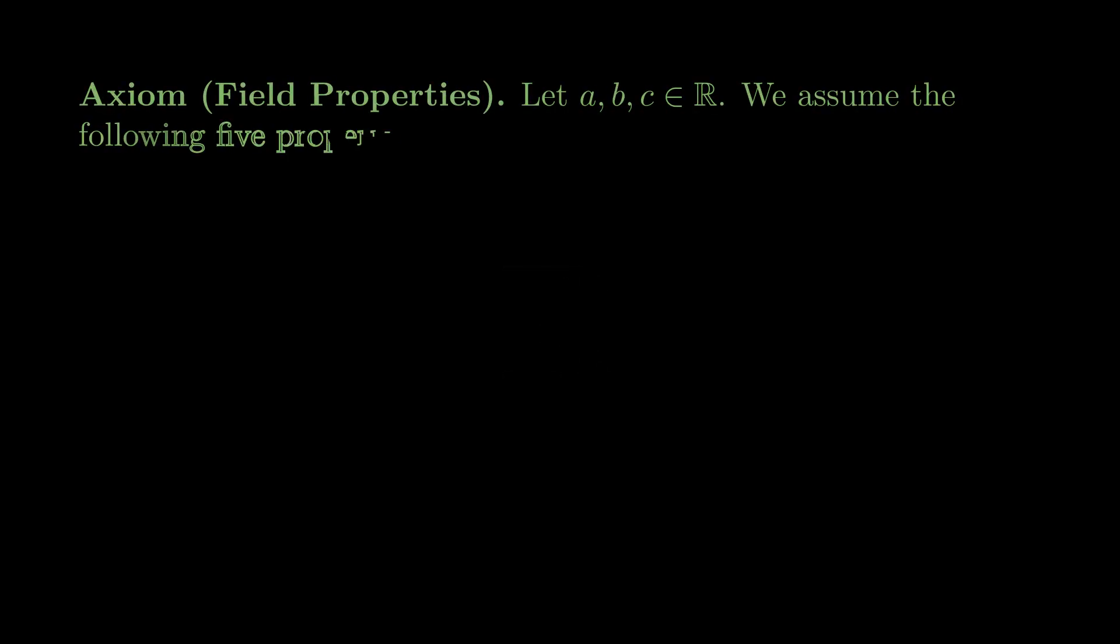Let's start by stating the field properties. These statements should feel intuitively true. First and foremost, the real number system, denoted with this script R symbol, is a set equipped with two fundamental operations: addition and multiplication. For any two real numbers, there exists a unique sum and a unique product, each of which is itself a real number. Letting a, b, and c represent arbitrary real numbers, we assume the following five properties.